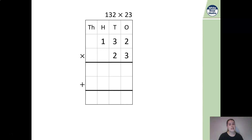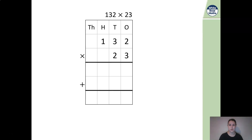We're going to be looking at multiplying 3 digits by 2 digits today. We're not going to be using the place value counters or the base 10, because I know that some of you have had your brains fried. But if you've managed to harness the skills of multiplying, this is going to help you today, and it should be a little bit easier as long as you've understood how to multiply in the previous lessons.